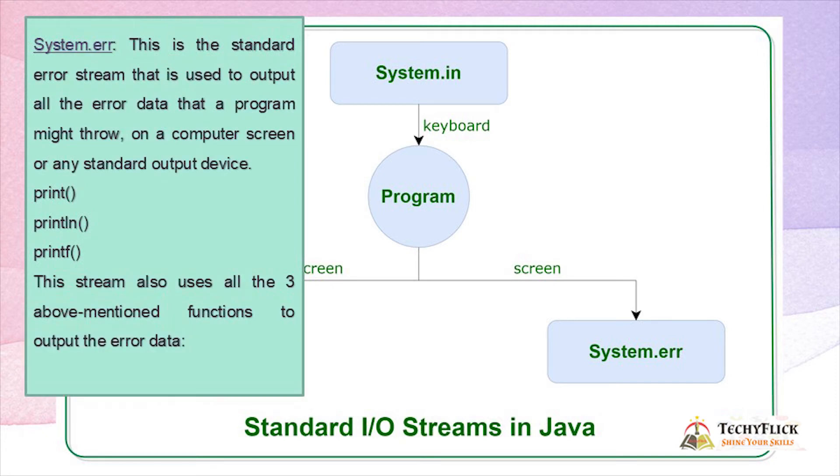System.err: This is the standard error stream that is used to output all the error data that a program might throw on a computer screen or any standard output device.